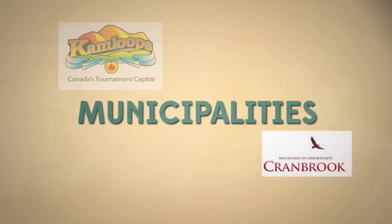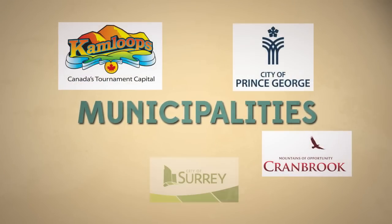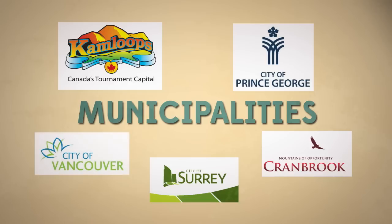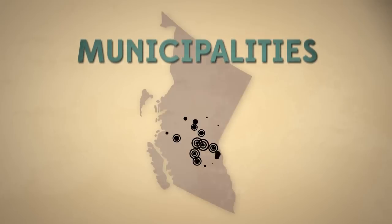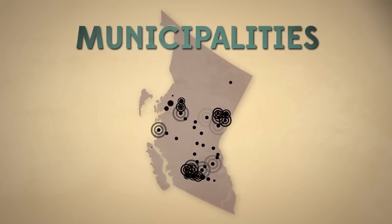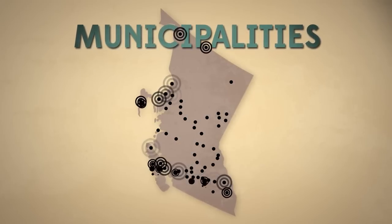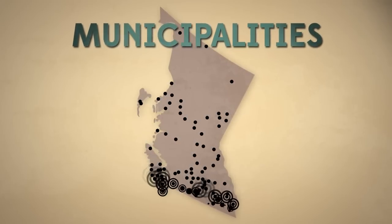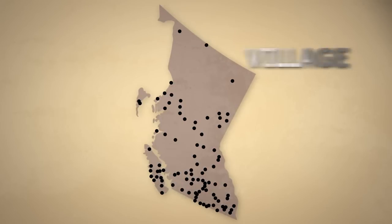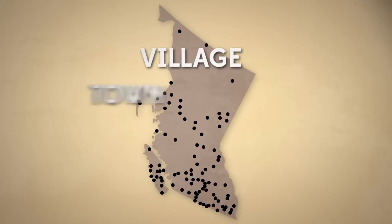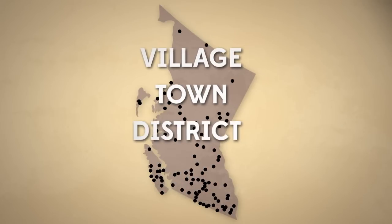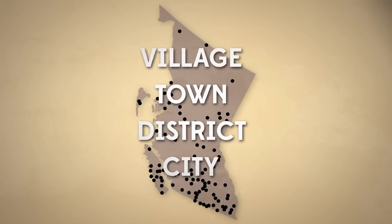A municipality is a legal structure incorporated by the province, allowing a community to manage itself and to provide and regulate local services. British Columbia has 162 municipalities. They can be called a village, town, district, or city.